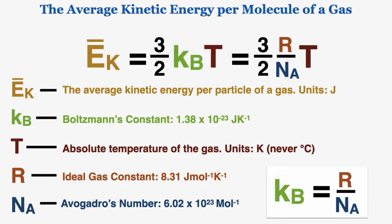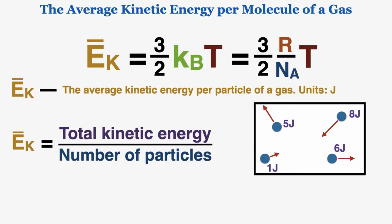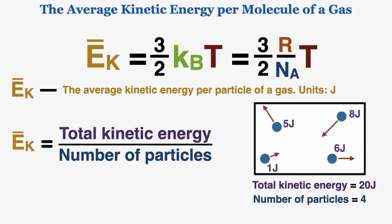I'll show you how to use this equation in a minute, but first let me clarify some variables. The average kinetic energy is not the total kinetic energy in the gas — it's the total kinetic energy divided by the number of particles, so it's literally the average kinetic energy per particle. For example, if we have a box with particles having 5, 1, 8, and 6 joules, the total is 20 joules across 4 particles, giving an average of 5 joules per particle.